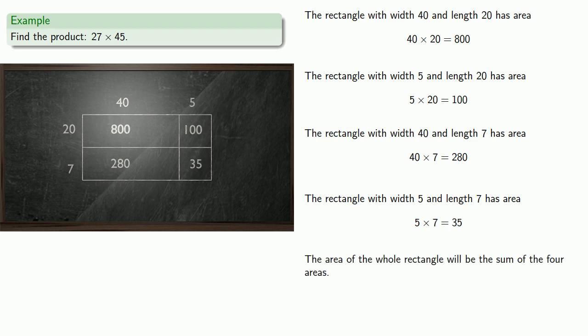And the area of the whole rectangle will be the sum of the four areas. And the area is the product 27 times 45 is 1215.